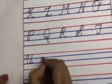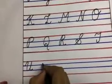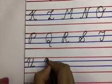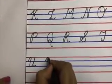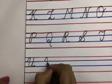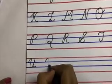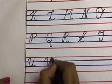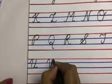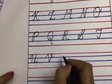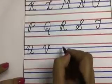Now again from the second line, you will touch the third line, then go up to the first line and do a curve. This is cursive capital V.